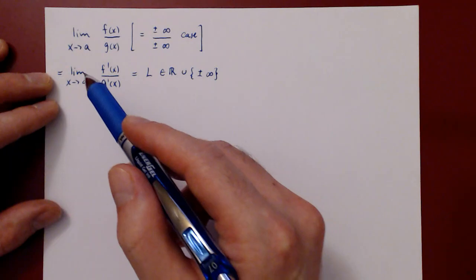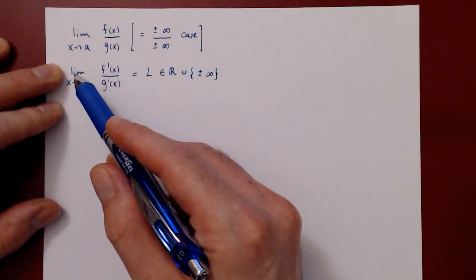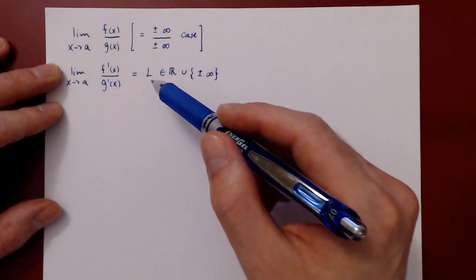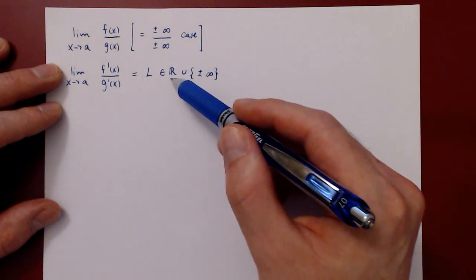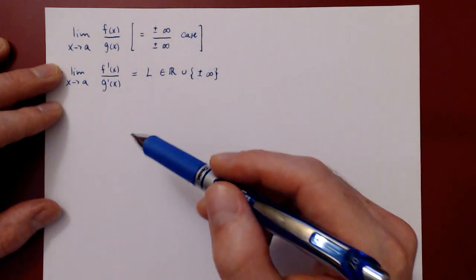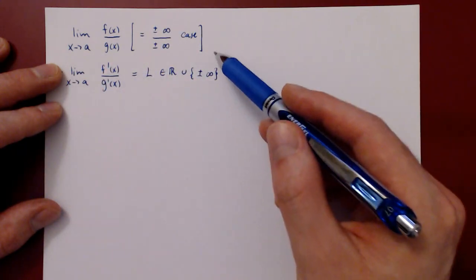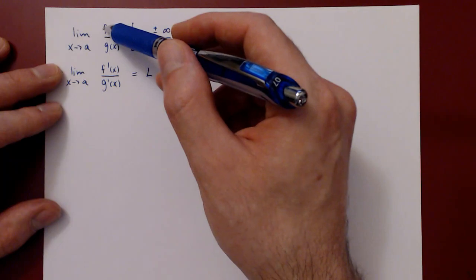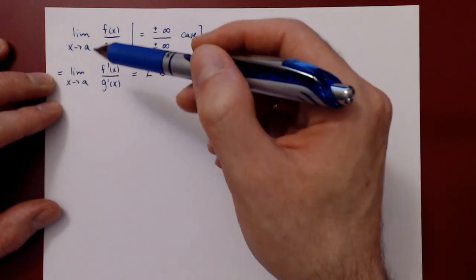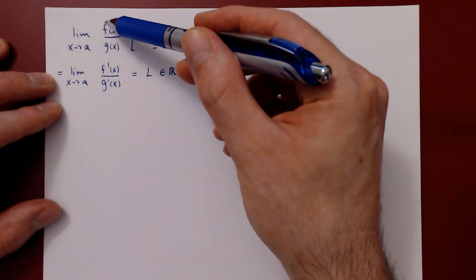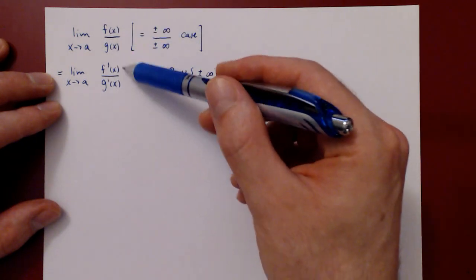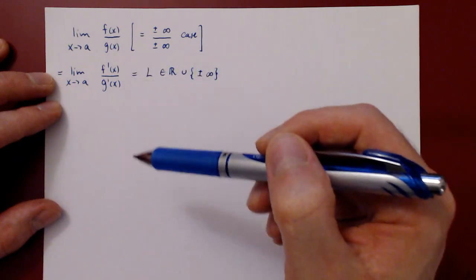And if the new limit as x approaches a of f prime over g prime exists — so is equal to some real number, or possibly L could be positive or negative infinity — then the original limit must be equal to L as well. So both the limit of the ratio of the functions and the limit of the ratio of their corresponding derivatives will be the same.